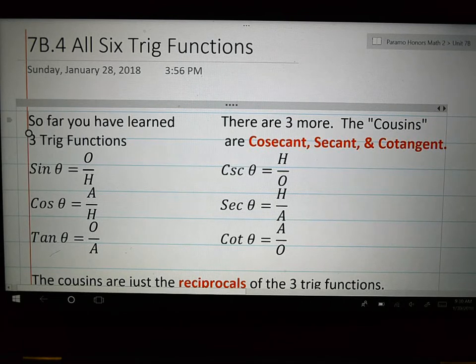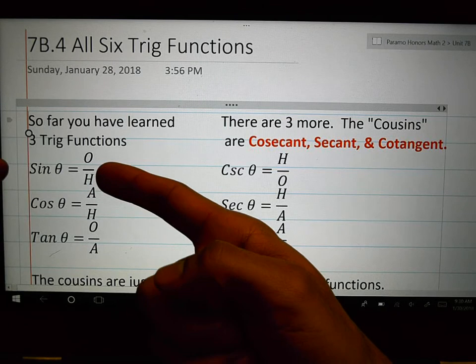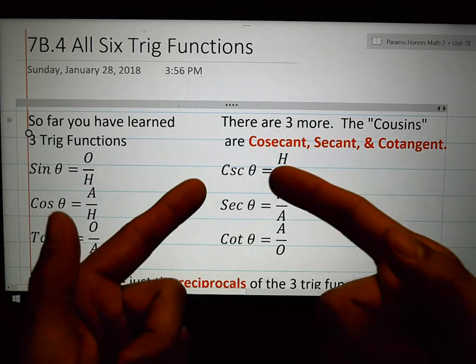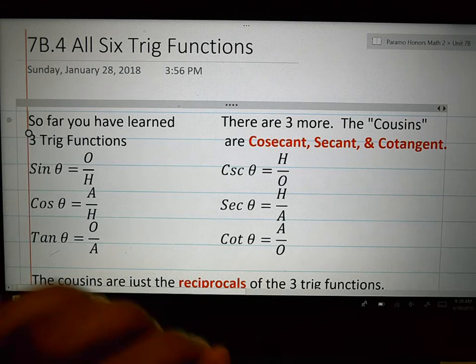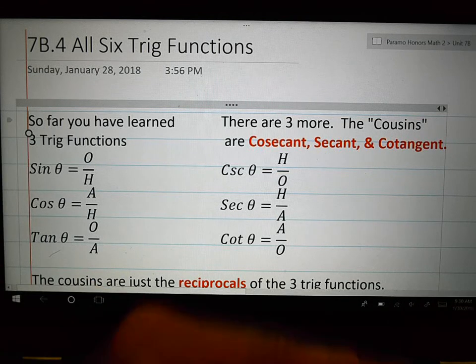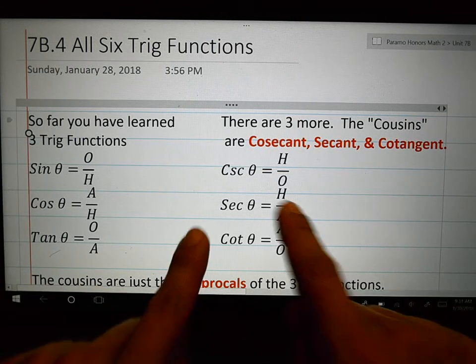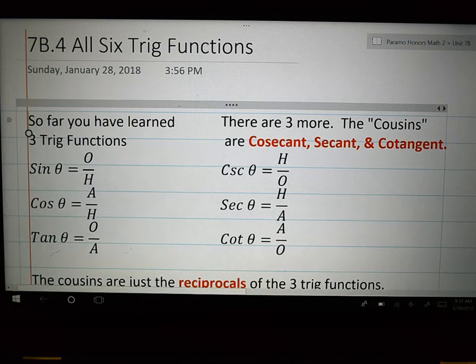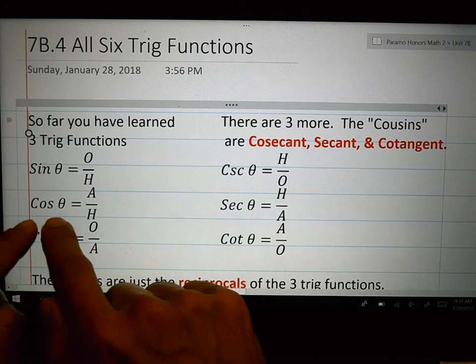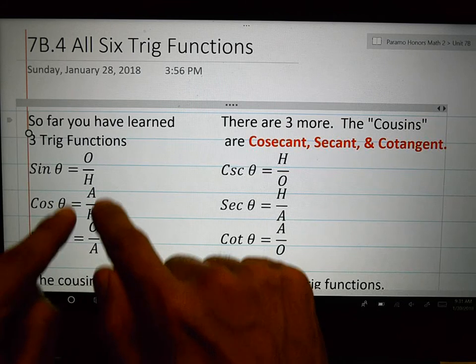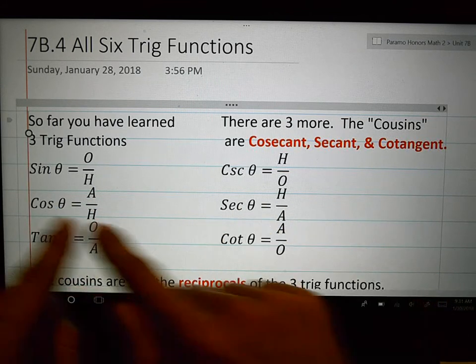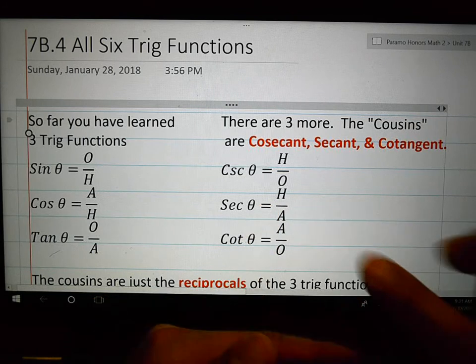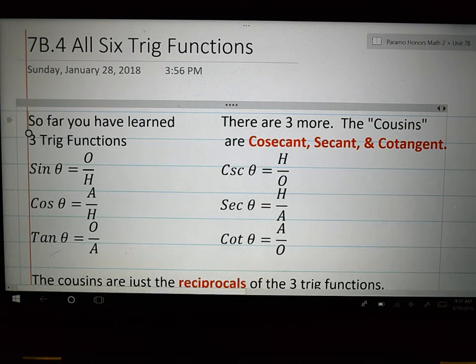But at this, so there you go. If you know that the sine of theta is O over H, the cosecant of theta would be H over O. They are just the reciprocals of each other. The cosecant is the reciprocal of sine. The cosine, if cosine of theta is A over H, then the secant of theta, its cousin is H over A. It's the reciprocal. It's the reciprocal ratio.